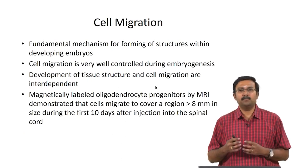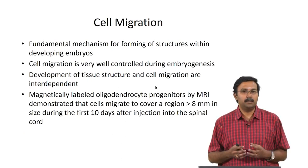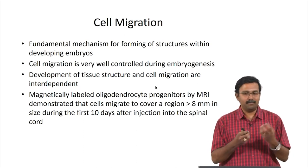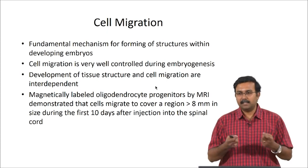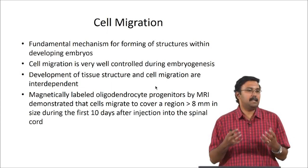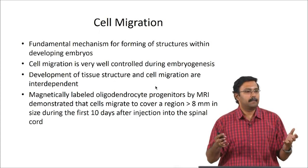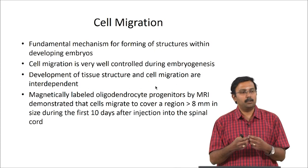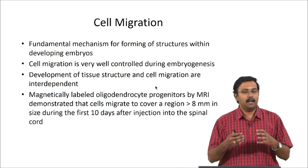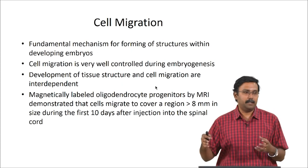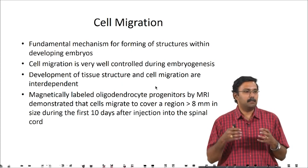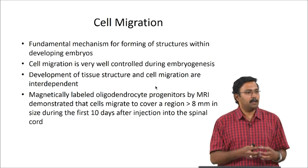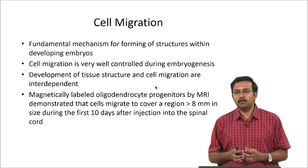The fundamental mechanism for forming structures within an embryo is cell migration. Think about it — you only have one cell to start with, it starts dividing. If the cells just keep dividing, you just have a blob of cells; you are not going to get defined shapes. What is going to happen is these cells are going to produce matrices and they are going to migrate to form different tissues, different organs. Because of this, during embryogenesis cell migration is very crucial.